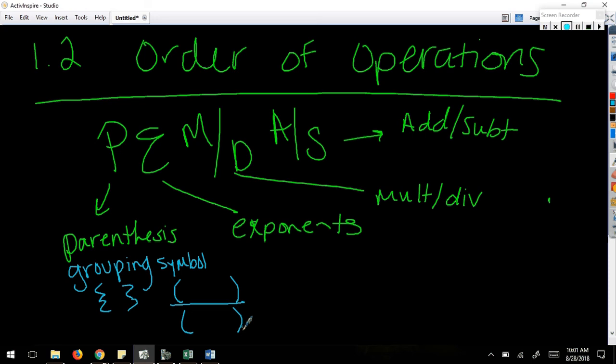Exponents are pretty self-explanatory, we talked about it yesterday. Why did I write multiplication division subtraction the way that I did, with slashes instead of just writing MDAS? Why did I write the MD in MDAS with a slash like that? Because whichever comes first.